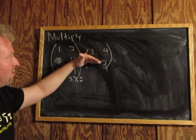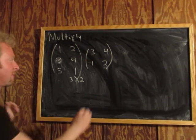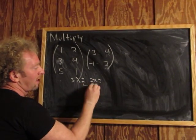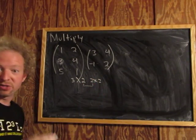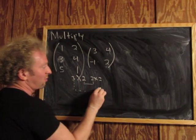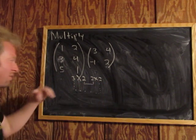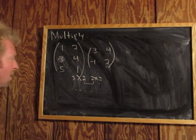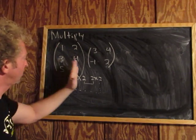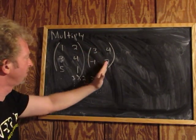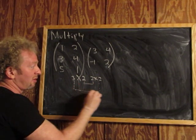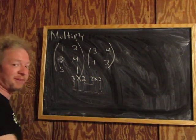This is a 2 by 2 matrix. So when these numbers are the same, that means you can multiply — yes, we can. And the result is going to be a 3 by 2 matrix: 3 rows and 2 columns. So again, this is 3 by 2 times 2 by 2. When these inner numbers match, we can multiply, and the result is always 3 by 2.